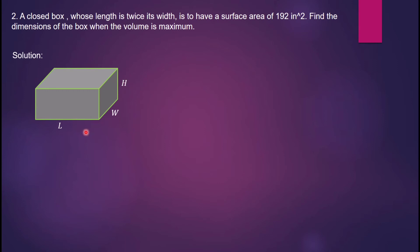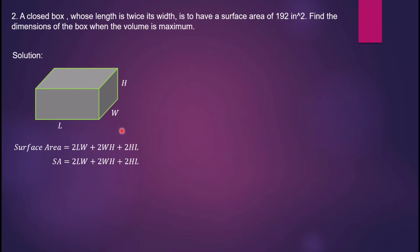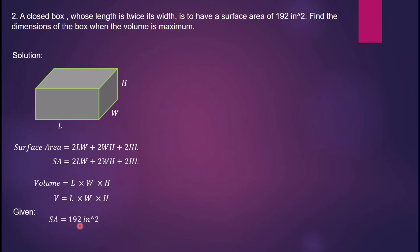Identify the formulas. The surface area of a rectangular closed box is SA = 2LW + 2WH + 2LH, and the volume is V = L × W × H. Given: SA = 192 square inches. The problem states length is twice its width, so L = 2W.